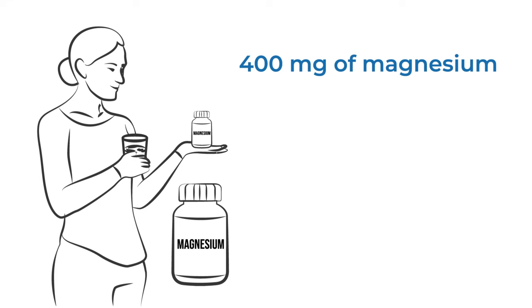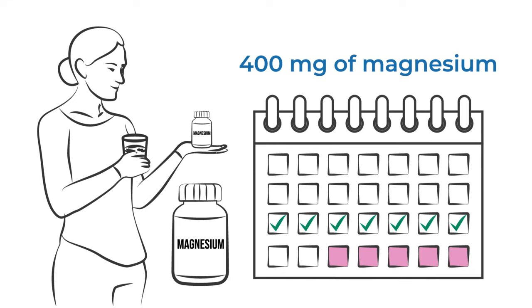400 milligrams of magnesium taken daily for a week starting on the 15th day of the cycle may be effective for preventing menstrual migraine.